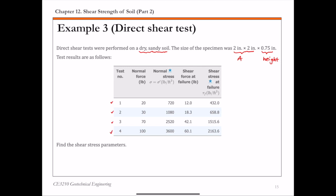And for each test, you are given the normal stress from which you can calculate the normal effective stress sigma prime, which is basically normal force over cross-sectional area A. So that's the normal stress. And then you're also given the shear force at failure from which you can calculate the shear stress at failure. So that's what we call tau F.